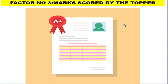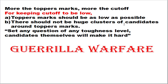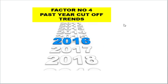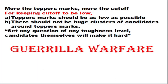Factor number three is the marks scored by the topper. The topper's score plays a vital role — the higher the topper's marks, the higher the cutoff will go. For the cutoff to be low, the topper's marks would need to be as low as possible, which is impossible to predict. The next factor is the past year cutoff rate, and I have analyzed the past 11 years of cutoff data under Mathematical Sciences for the JRF category.